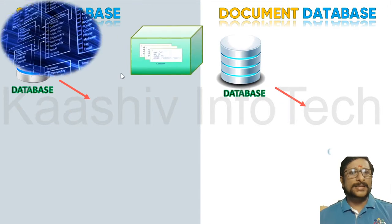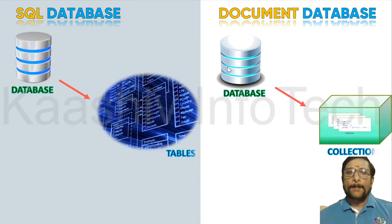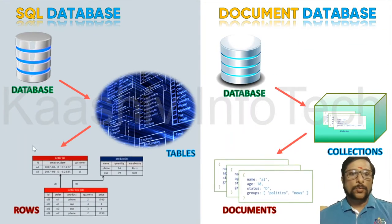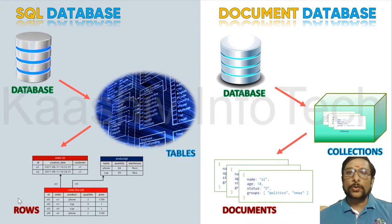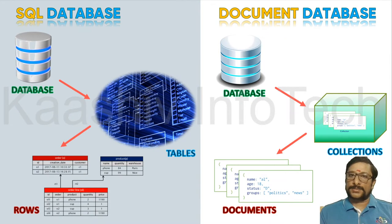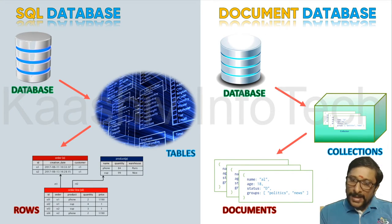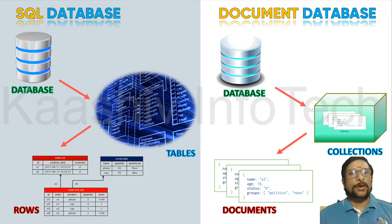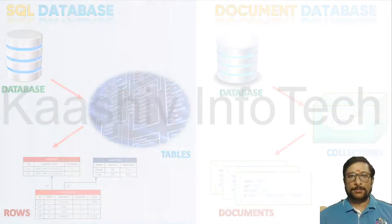The database is the same, but here in SQL we call them tables — over here in document database, we name them collections. In SQL you got rows; here we got documents. That is why it is called a document database. So the document database has: a database, with collections, and inside collections you got the documents. This is how the segregation happened.